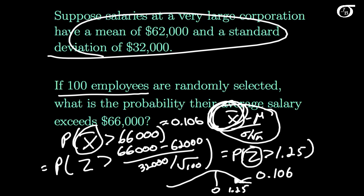So the central limit theorem is very important. It allows us to do probability calculations like this and to carry out important statistical inference procedures even when we're sampling from non-normal populations. The world of statistics would be very, very different if not for the central limit theorem.